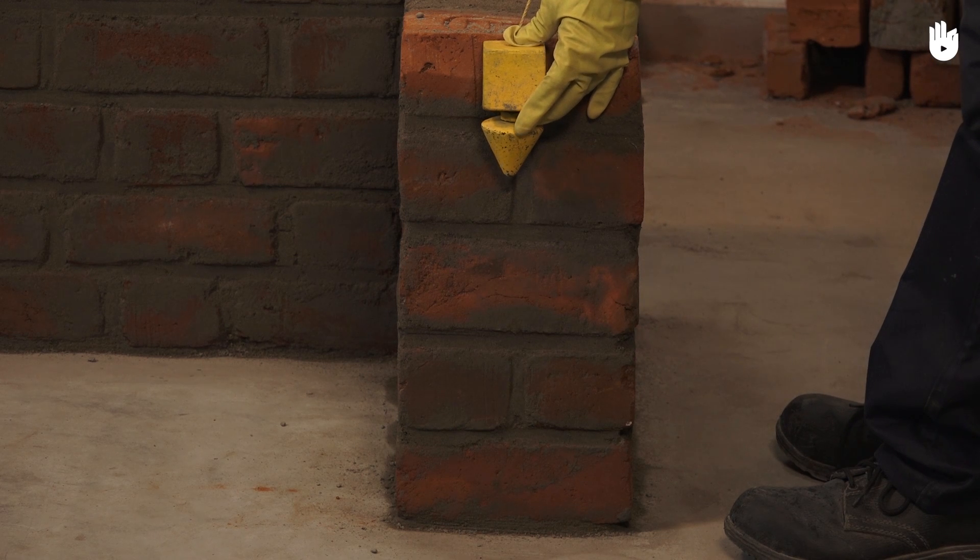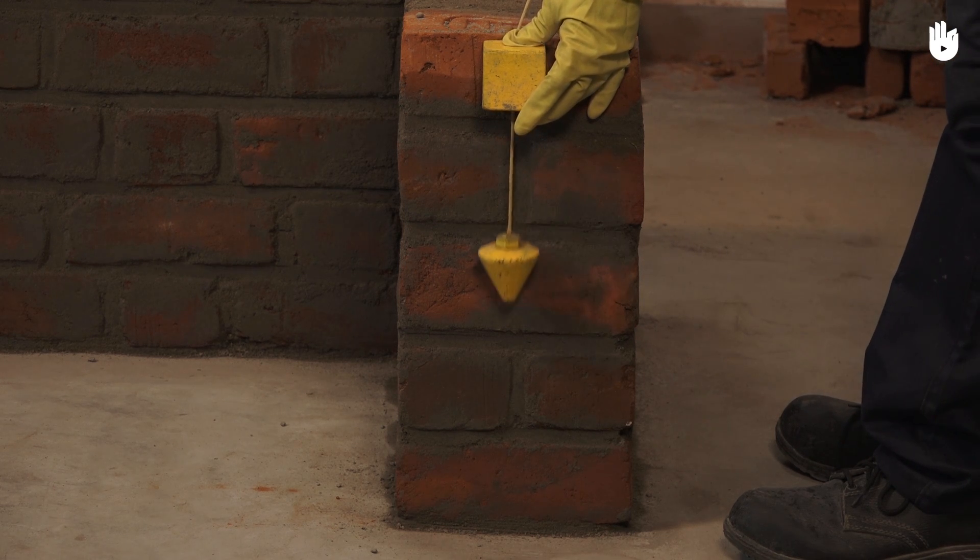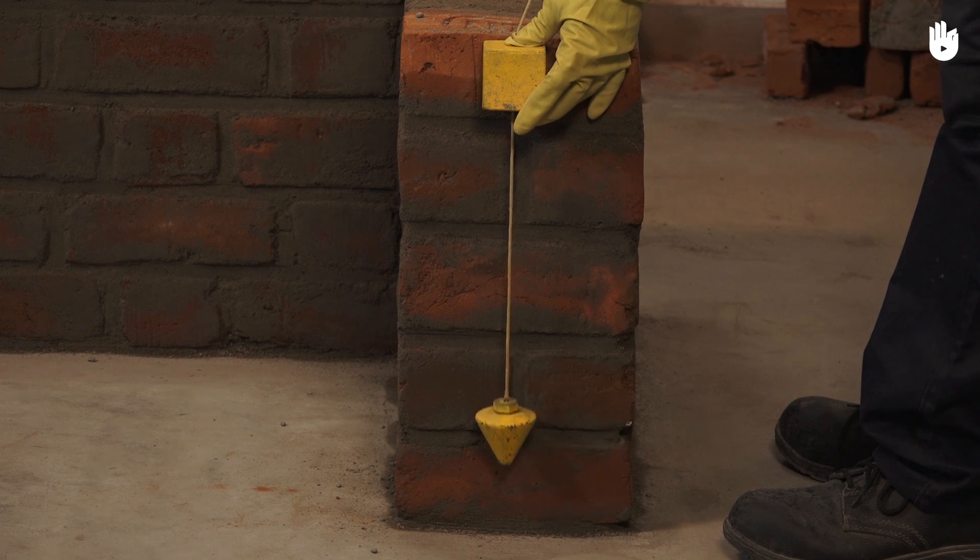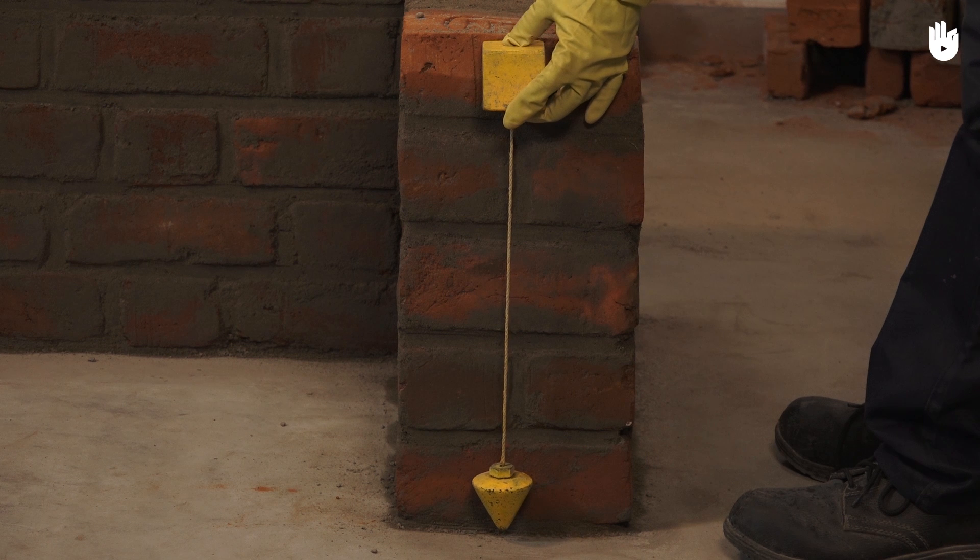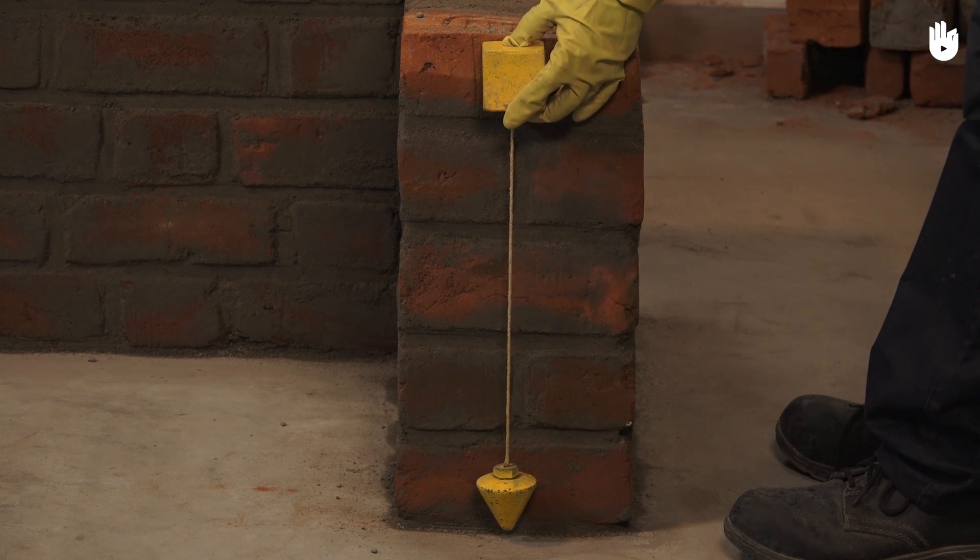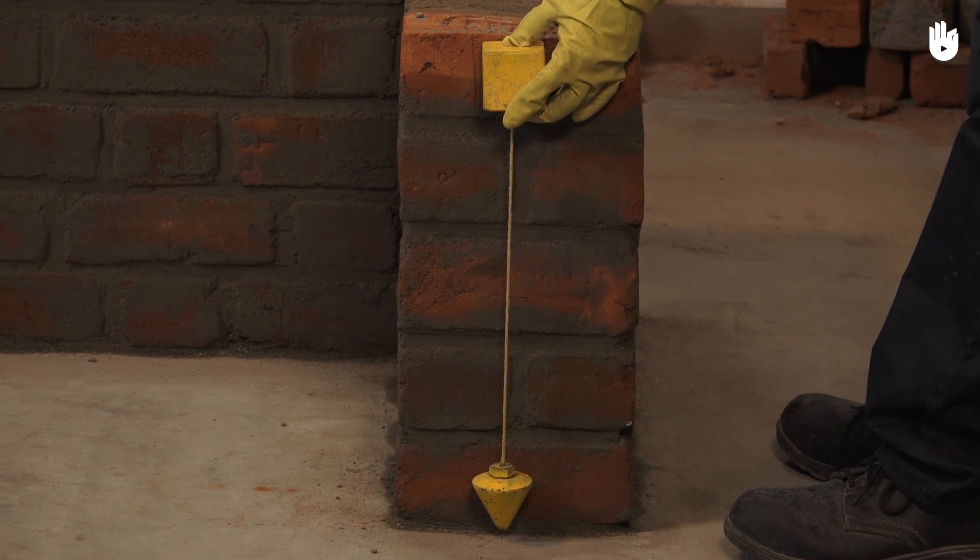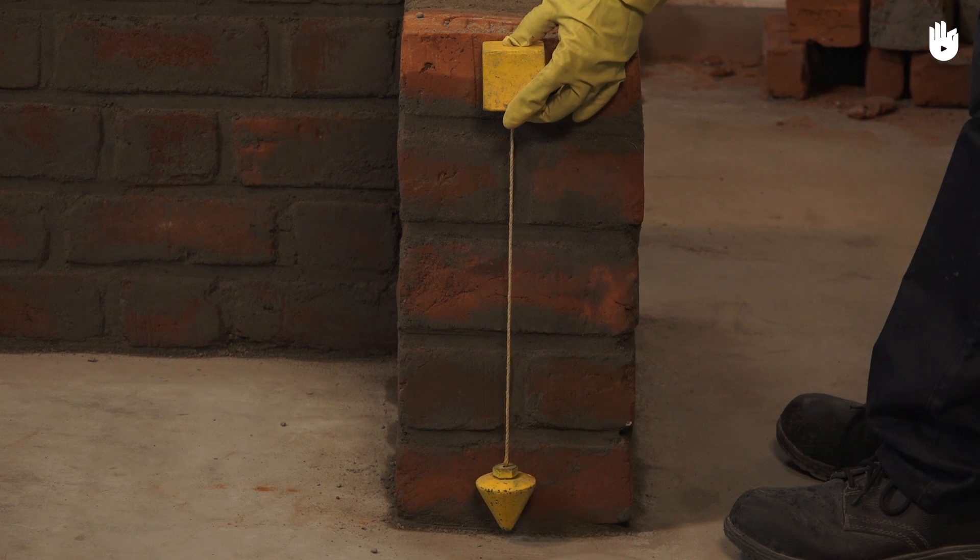In this video you will learn how to use a plumb bob. A plumb bob, also known as a plummet, is an instrument that uses a weighted object called the bob to measure the verticality or plumb of a perpendicular plane.